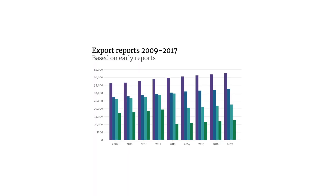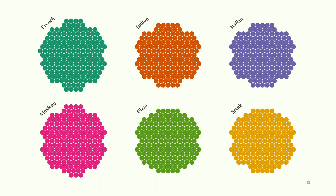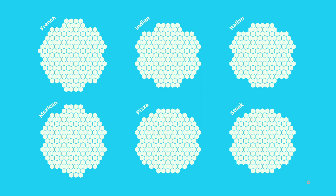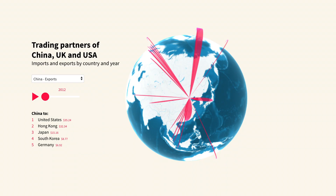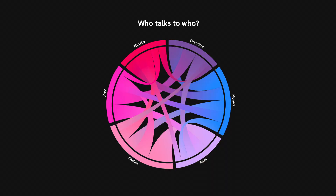And best of all, Flourish can be loaded up with your company color schemes, fonts, and logos, so everything you create will look as though it came from a design agency.